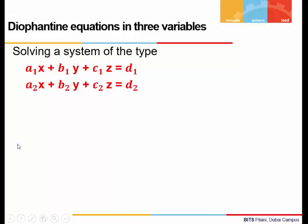Let's say we are given two equations: a₁x + b₁y + c₁z = d₁ and a₂x + b₂y + c₂z = d₂. You notice we have three unknown variables here: x, y, and z.